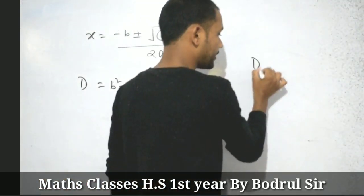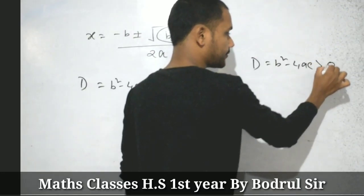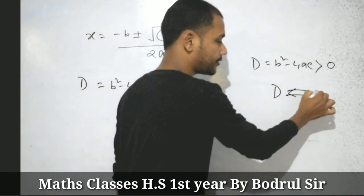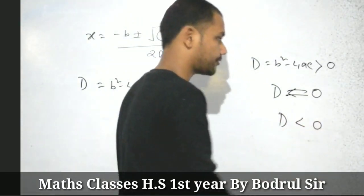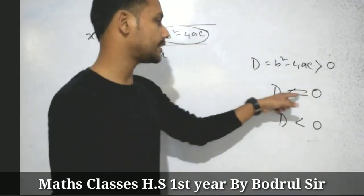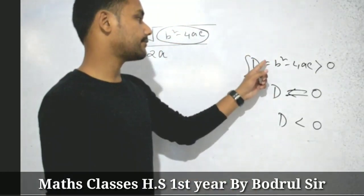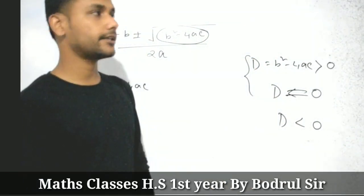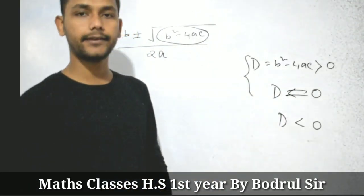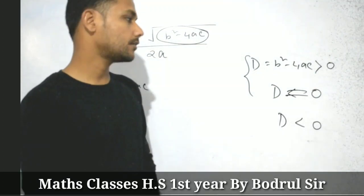If the discriminant D equals b squared minus 4ac is greater than 0, similarly if discriminant equals 0, and same way if D is less than 0. When discriminant is greater than 0, the roots are real and distinct. If discriminant equals 0, then the roots are real and equal. And if discriminant is less than 0, then there are no real roots.